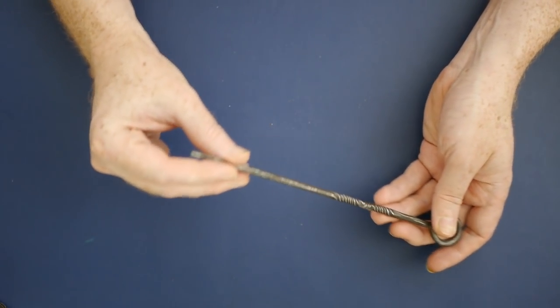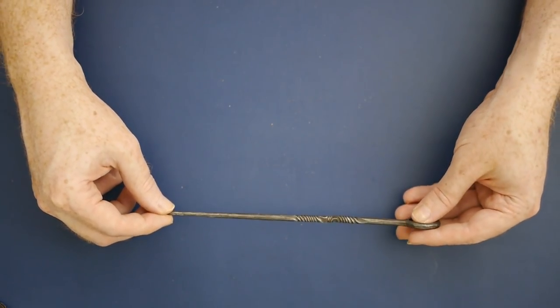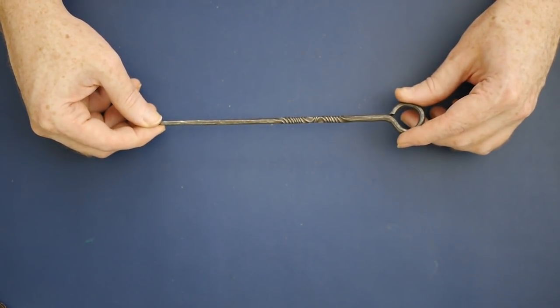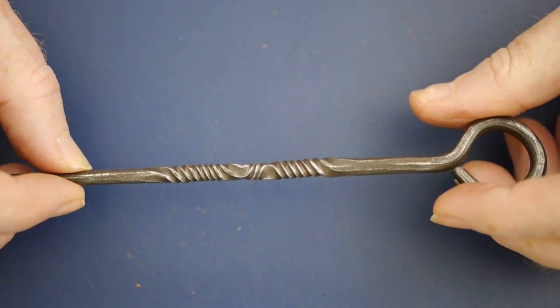I'm honestly not sure what this is for, but it's a lovely piece of handmade blacksmith work. If you have any ideas or suggestions what it is, please let me know in the comments. I really like the twist work in the middle here.